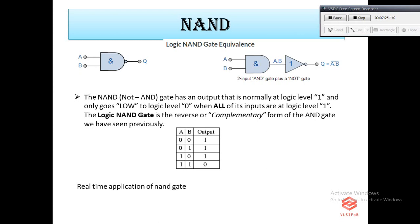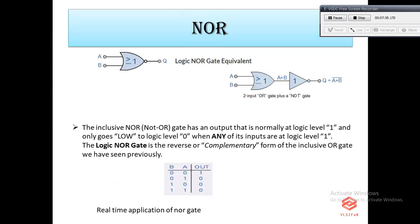The NOR gate is a combination of an OR gate followed by a NOT gate. The outputs of all NOR gates are low if any of the inputs are high. As you can see, if any of the inputs A or B are high, the output is low. The symbol is an OR gate with a small circle on the output representing inversion. The NOR gate is also a universal gate — using NOR gates we can build any type of gate, as shown in the later slides.